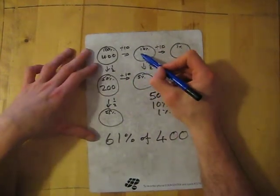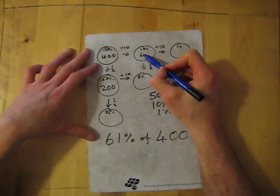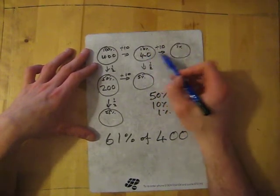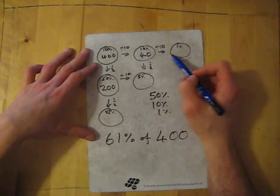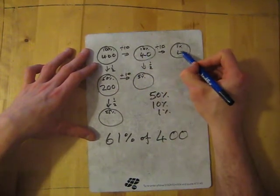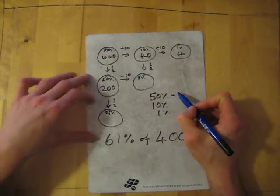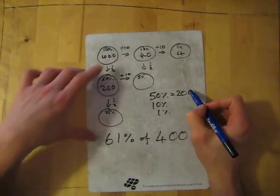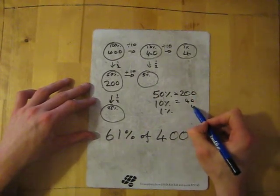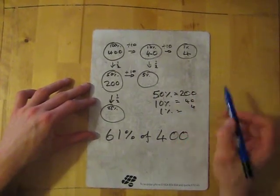10% I'm going across, dividing 400 by 10, which gives me 40. I also need the 1%, so I'm going across and dividing by 10 again. 40 divided by 10 gives me 4. So 50% I've got which is 200, 10% I've got which is 40.